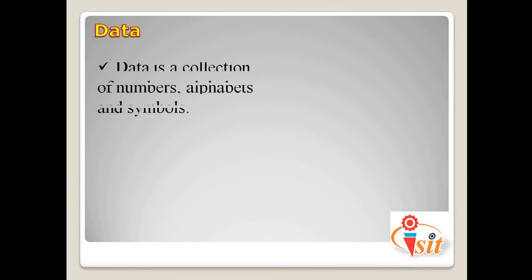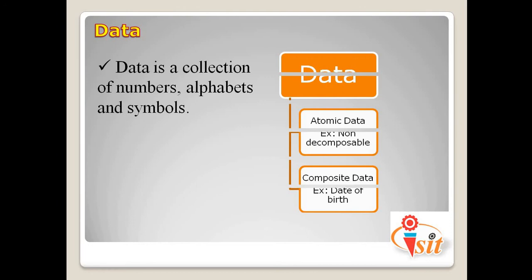Before moving to data structures, we need to know what data means. As previously discussed, data is a collection of numbers, alphabets, and symbols. Basically, we have two types of data: the first is called atomic data and the second is called composite data.